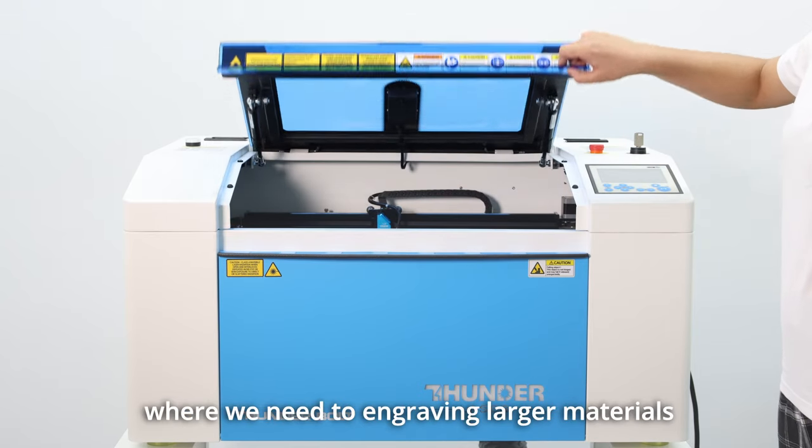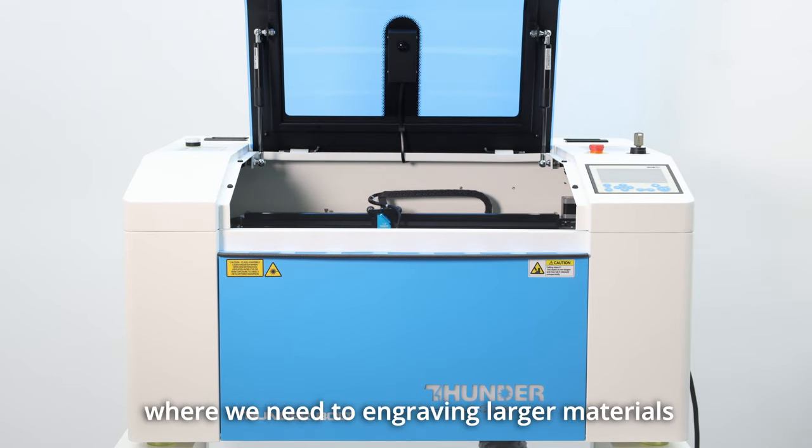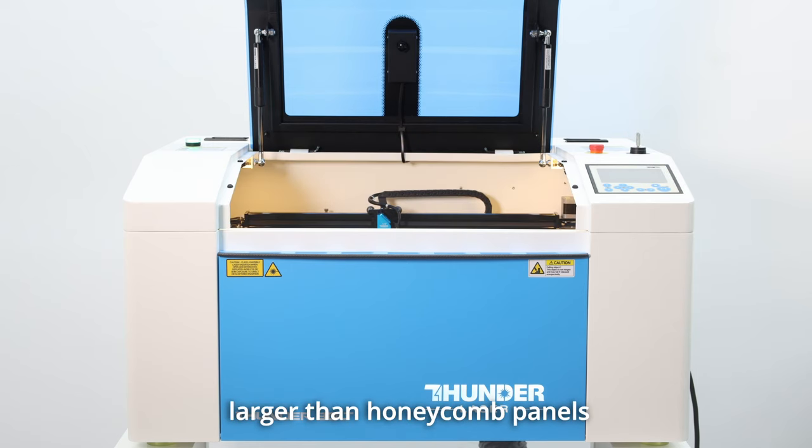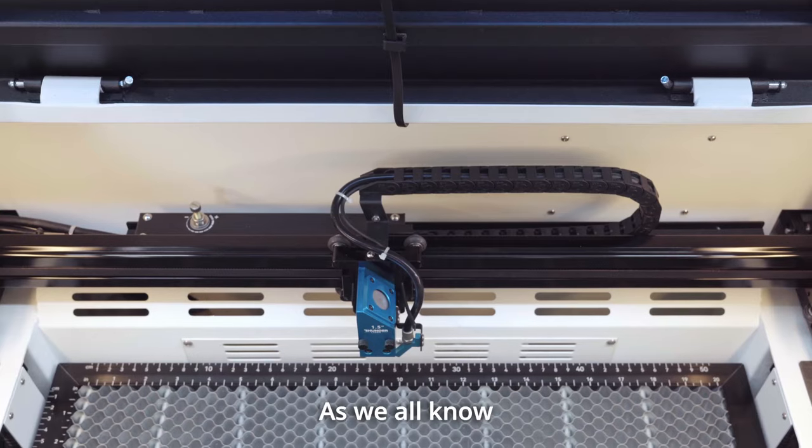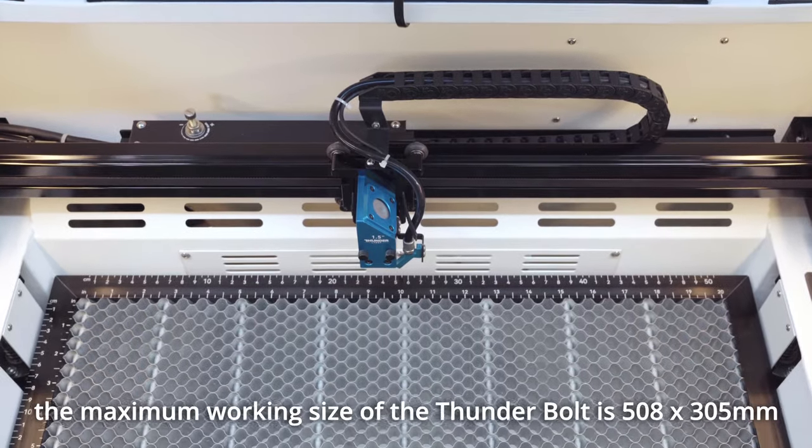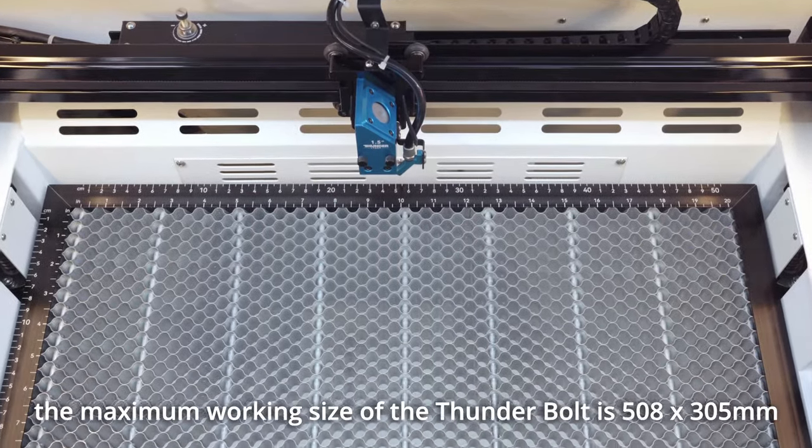Sometimes we encounter situations where we need to engrave larger materials, especially when dealing with materials larger than honeycomb panels, which can be quite challenging. As we all know, the maximum working size of the Thunder Bolt is 508 x 305 mm.